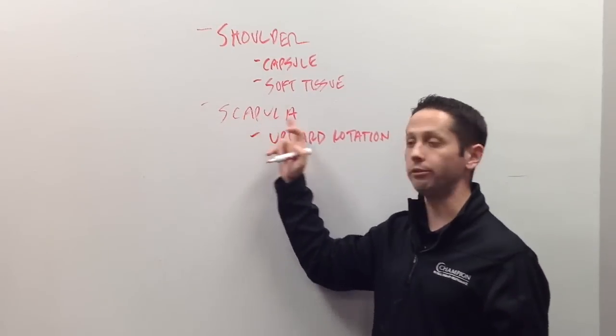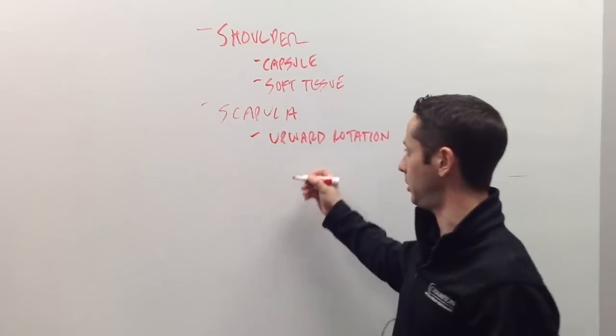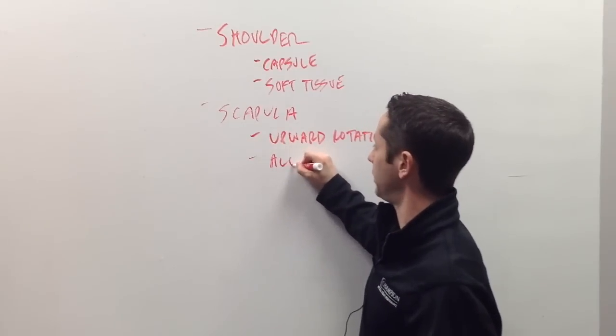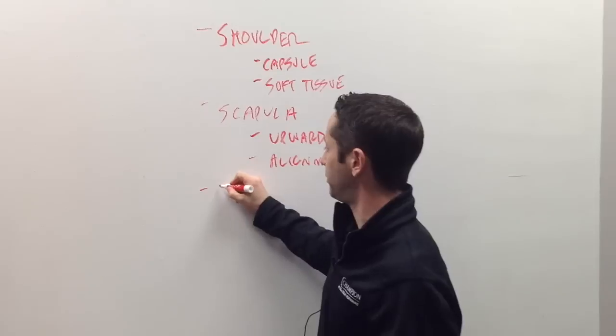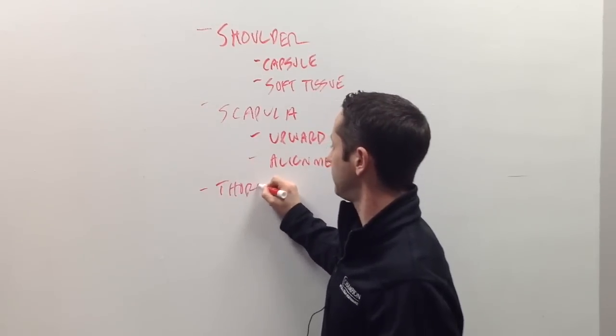We have to make sure that we have a good balance between those muscle groups. The other thing that could be happening if we don't have full upward rotation of the scapula is that we just have poor alignment. And that's really going to come down to what we talk about with number three is the thoracic spine.